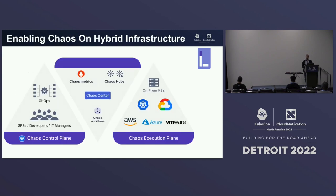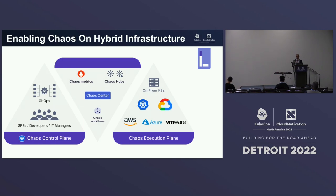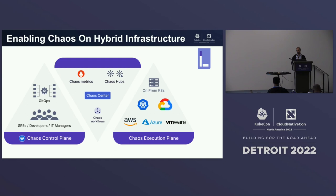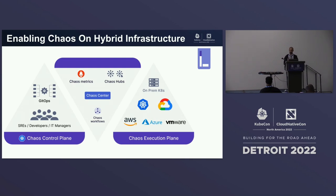With Litmus, you have one control plane comprising a dashboard, a chaos center, a chaos server, and MongoDB to store state. You can connect other Kubernetes clusters or namespaces running anywhere — on-prem, AWS, Azure, VMware. As long as you have network connectivity, you can connect them and run chaos. This is powerful because modern applications are often spread across different cloud providers for redundancy.